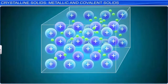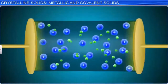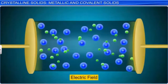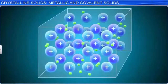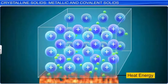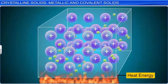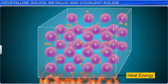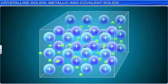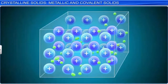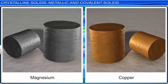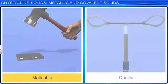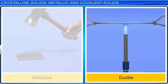The electrons flow through a network of positive ions when an electric field is applied. Similarly, when heat is supplied to one corner of a metallic solid, the free electrons spread the thermal energy evenly throughout the solid. The presence of free electrons also accounts for the luster and color in some cases. Metals are highly malleable and ductile, and metallic solids have fairly high melting and boiling points.